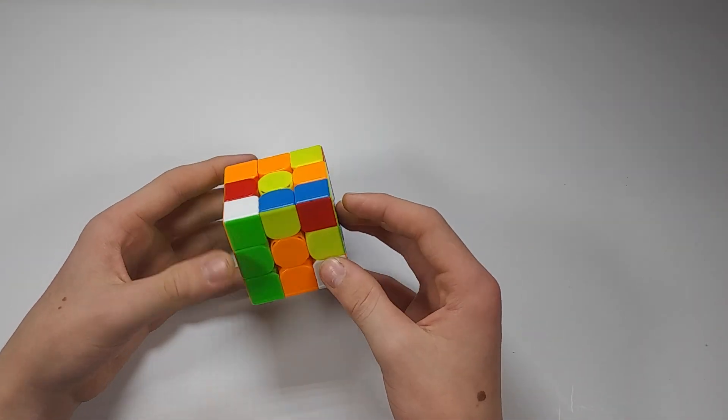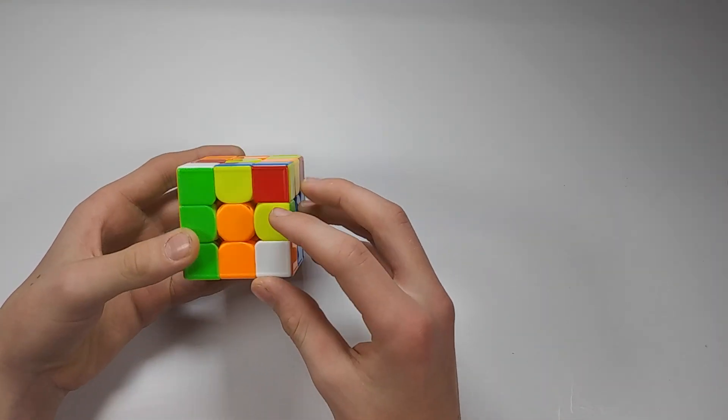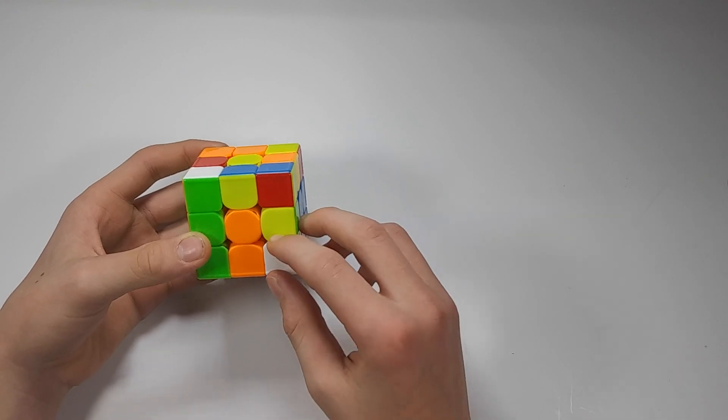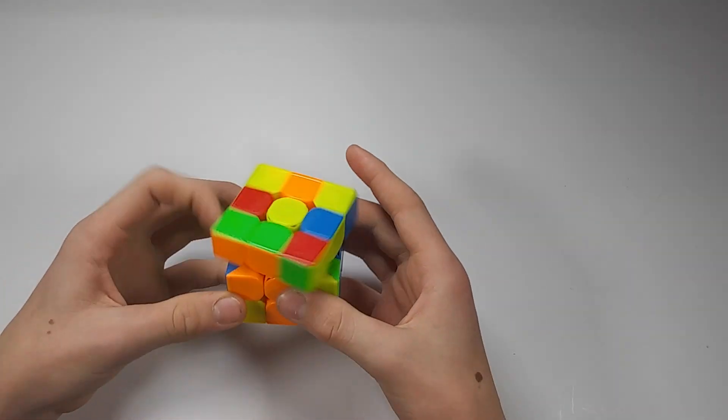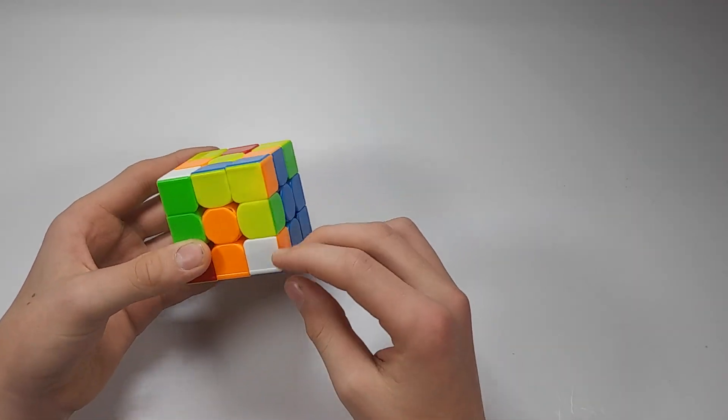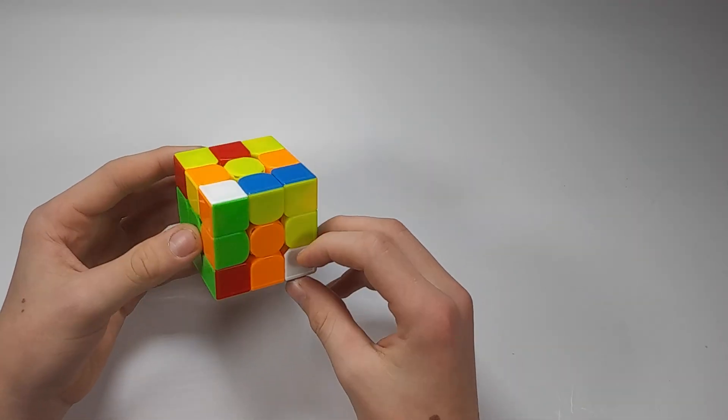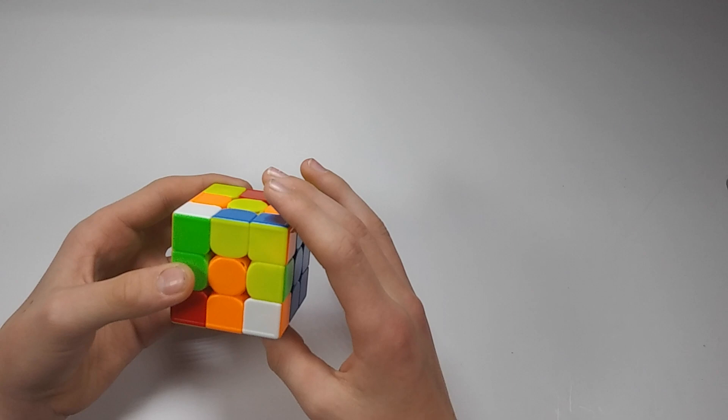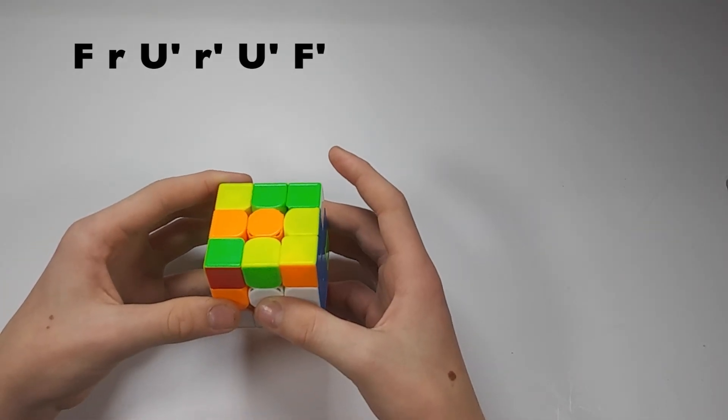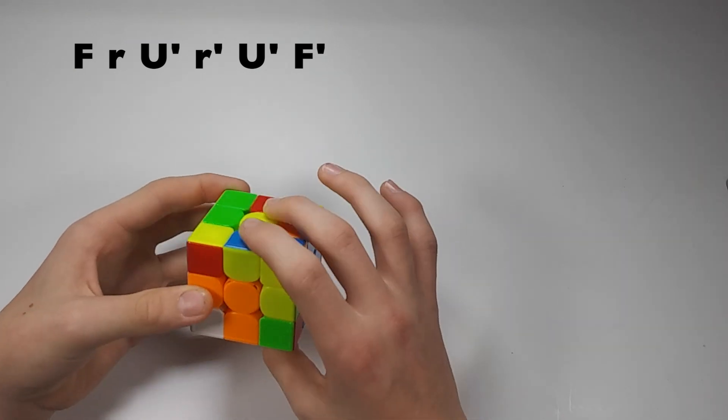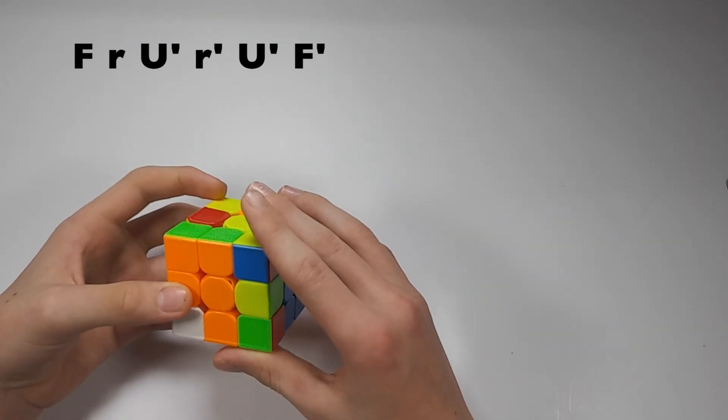For this case, rather than taking out this pair when you have this open slot on the front right and then inserting it into its slot, what you can do is, as long as this front right slot is open, do F, wide R, U', wide R', U', F'.